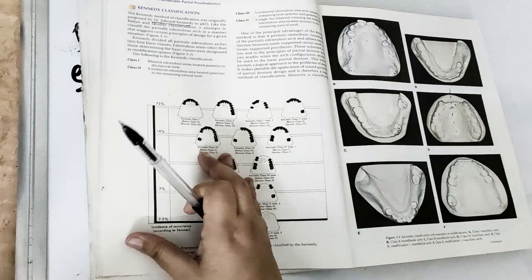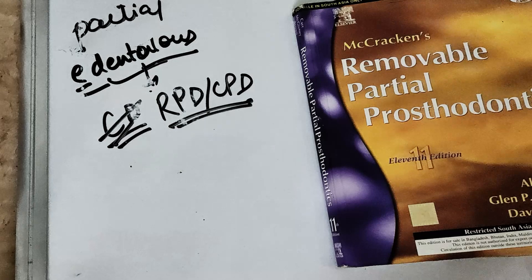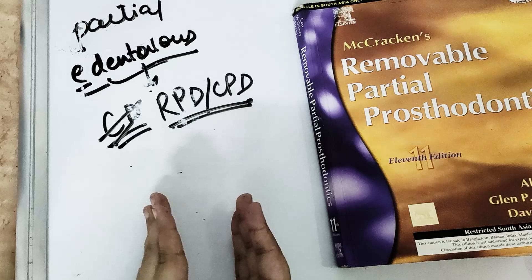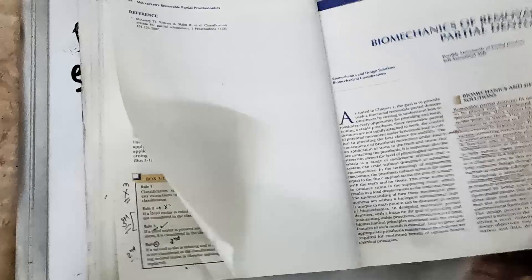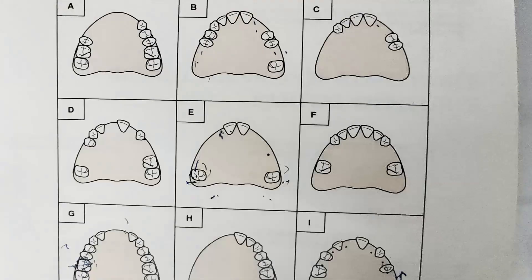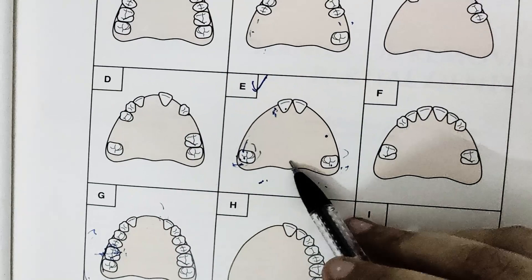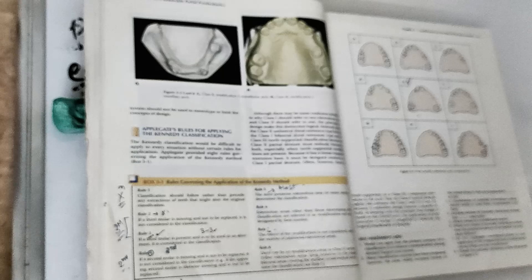This is covered in Chapter 3, page 19 of McCraken's 11th edition, Removable Partial Denture Prosthodontics. I hope you are all clear with the classification and can now classify all partially edentulous casts. Comment in the comment section which classification is the E-classification. If you enjoyed the lecture, give it a thumbs up and support us via the links in the description. Keep reading, keep learning, stay safe — see you in the next video!